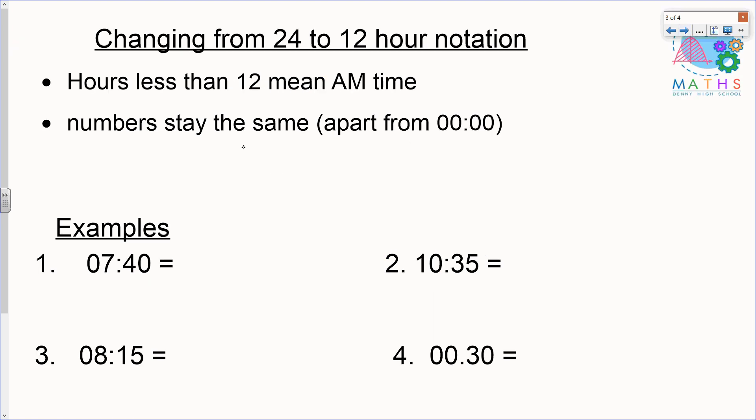Let's first of all have a look at where we have hours less than 12. If the hours are less than 12 this means we have an am time. The numbers stay the same apart from if we see 00. We learned in the last video that 00:00 is midnight. This is when the day starts, so this is 12 am.